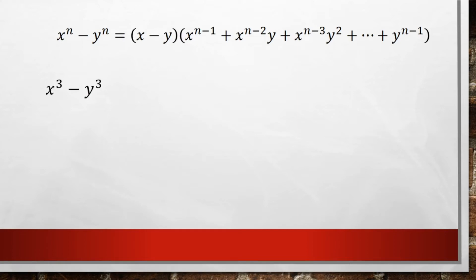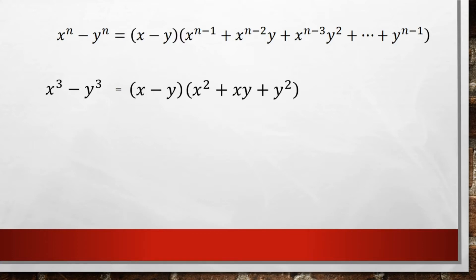Let's look at an example. If I have x cubed minus y cubed, the first thing I'm going to do is have an x minus y factor. Then I'm going to start with x to the n minus 1, which in this case is x squared. y will have a 0 exponent, so it'll be x squared plus... Now x squared goes down to x, and y goes up to exponent 1, so it'll be plus xy. Then x goes to 0 exponent and y goes to exponent 2, so it'll be plus y squared. So the whole thing is x minus y times x squared plus xy plus y squared.